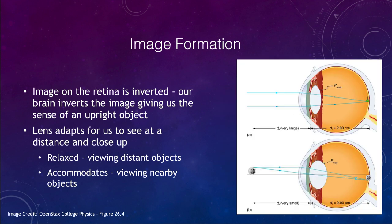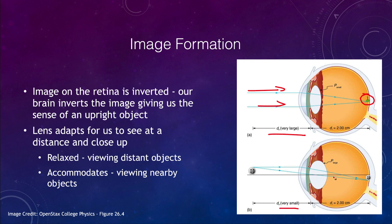Let's look at how this works for the relaxed and the accommodated eye. In the relaxed eye for viewing distant objects, light rays come in parallel and are brought to a focus on the retina. For a very small distance, the lens changes shape — it stretches out differently. With a much closer object, light rays are not coming in parallel, but the lens still brings the image to focus on the retina, just as for the distant object. Because the lens is able to adapt, we can view both distant and nearby objects without needing constant adjustment.